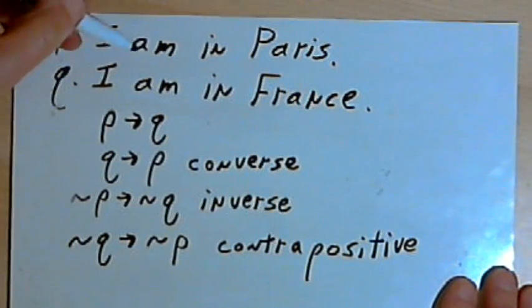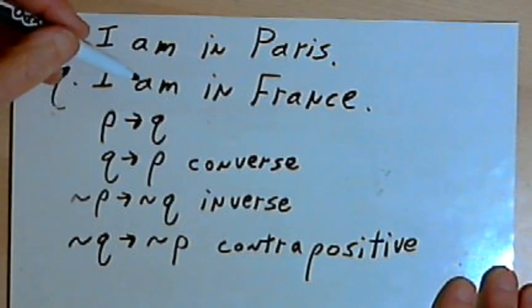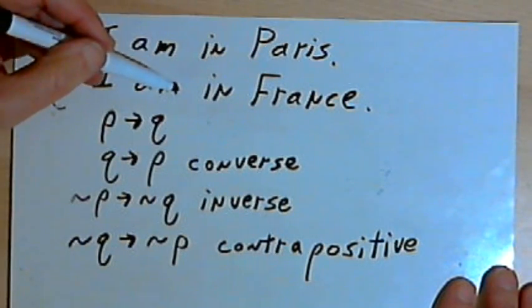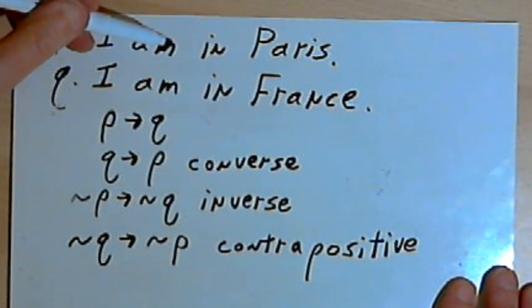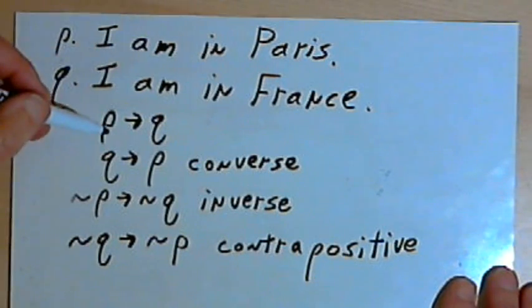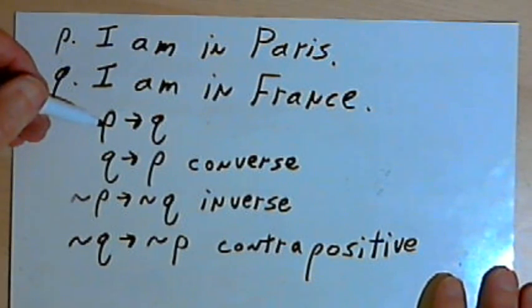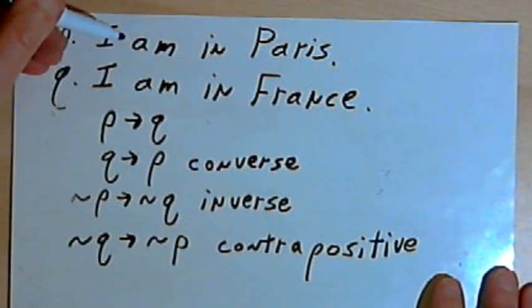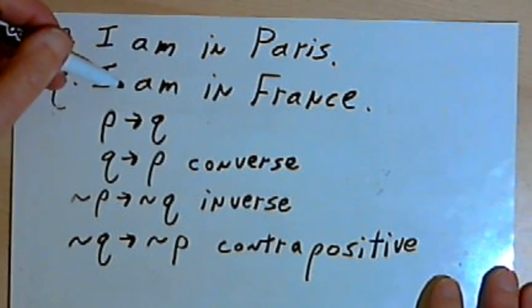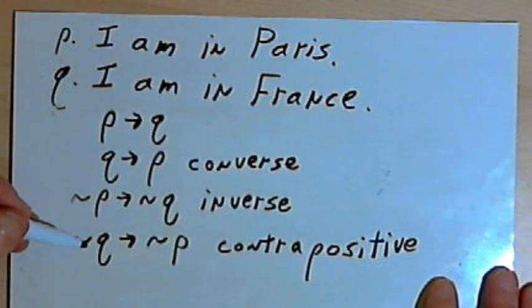And reading this with the original statements, I would say, if I am not in France, then I am not in Paris. And that makes sense. So if the original conditional made sense, if the original conditional was true, if I am in Paris, then I am in France, then the contrapositive is also true.